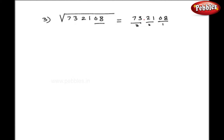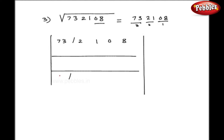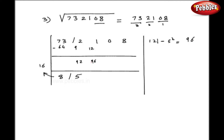Let us take one more example: square root of 732108. From 73 I can subtract 8² = 64, and on the left-hand side I write 16, that is 8×2. My remainder is 9, so my first figure is 92. Dividing 92 by 16, my first quotient digit is 5. So I get 92 minus 80, remainder 12. From 121 I subtract the Dvandva of 5, that is 25. So my next figure is 96. Again 96 divided by 16, the division is again 5.